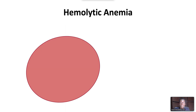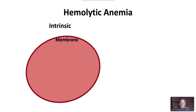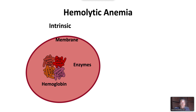Hemolytic anemia refers to anemia caused by accelerated red blood cell destruction. It can be caused by intrinsic abnormalities of the red blood cell or by factors extrinsic to or occurring outside the red blood cell. Intrinsic causes are primarily but not always inherited, and include problems associated with the red cell membrane, red cell enzymes, and hemoglobin.